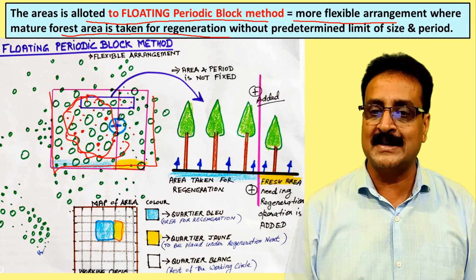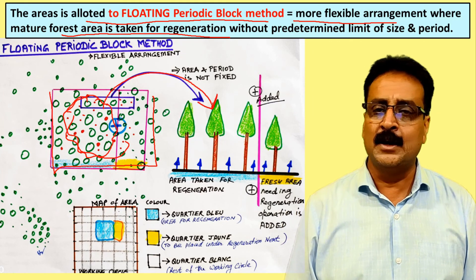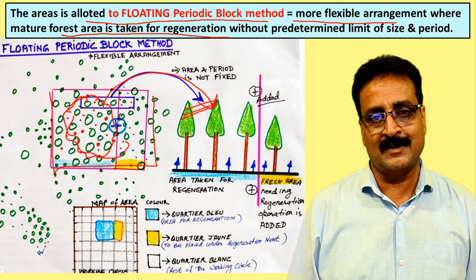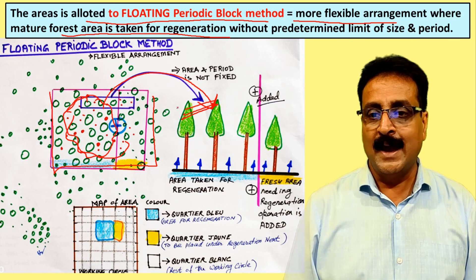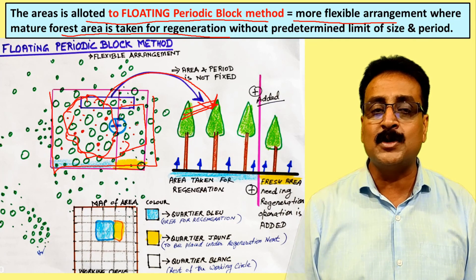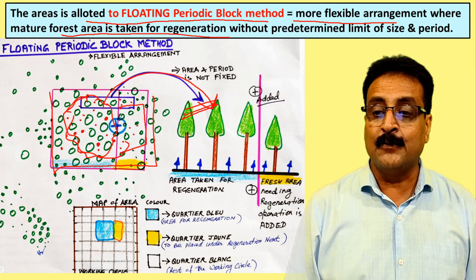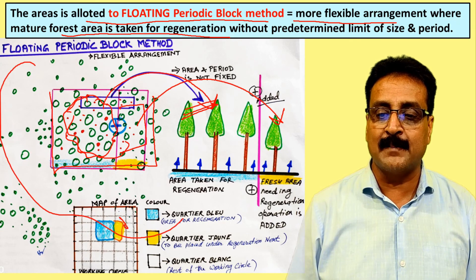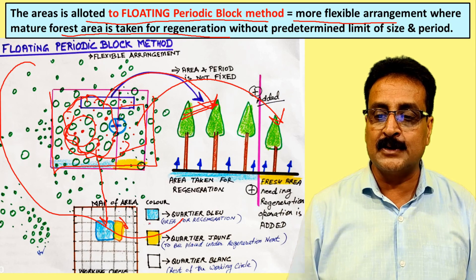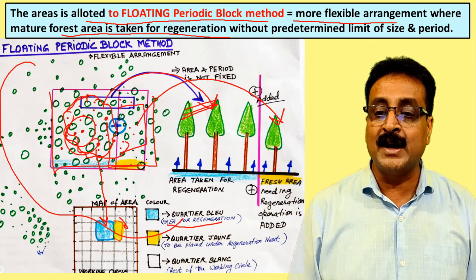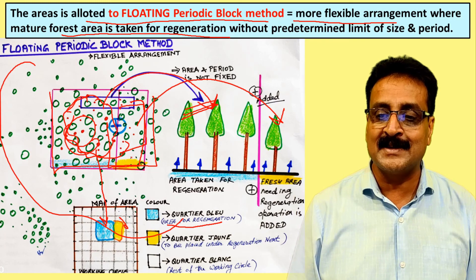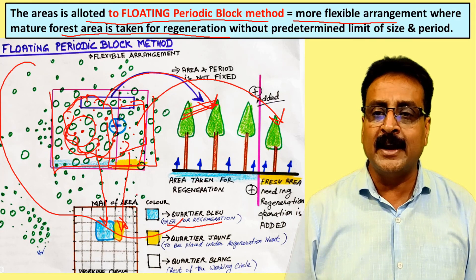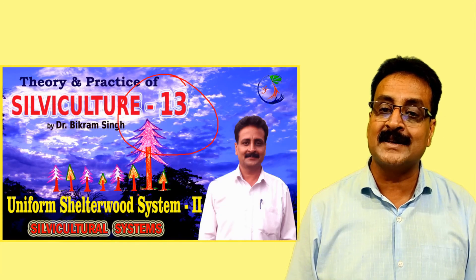For example, if we feel some regeneration of sal is occurring in a certain area, neither the area nor rotation is fixed. We start all tending and harvesting operations there. If a nearby area can also respond to tending, fresh area is added. On the map, the blue color shows the area for regeneration already underway, and the yellow color shows a new area we feel can also respond - this is covered in detail in Lecture 13.